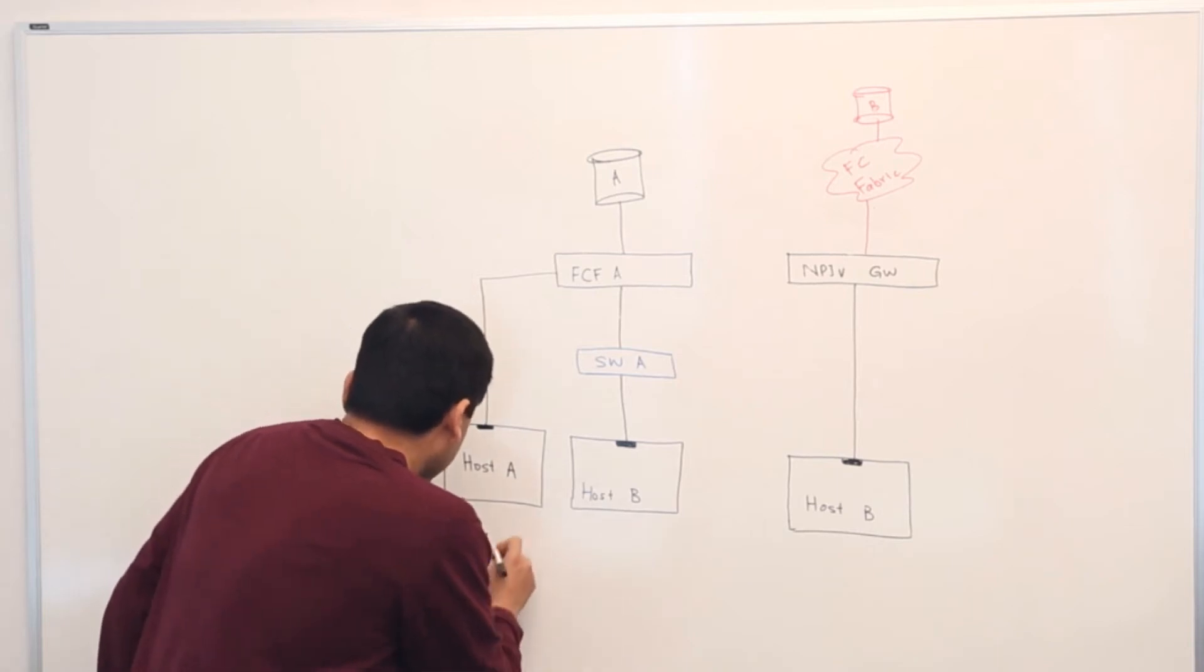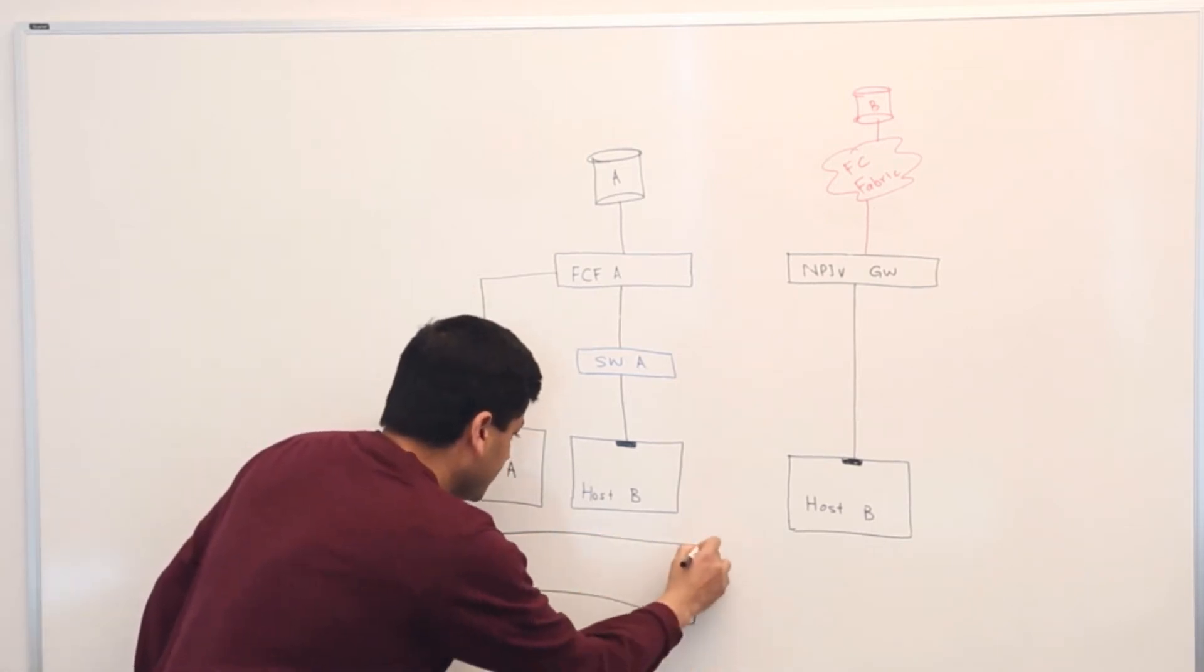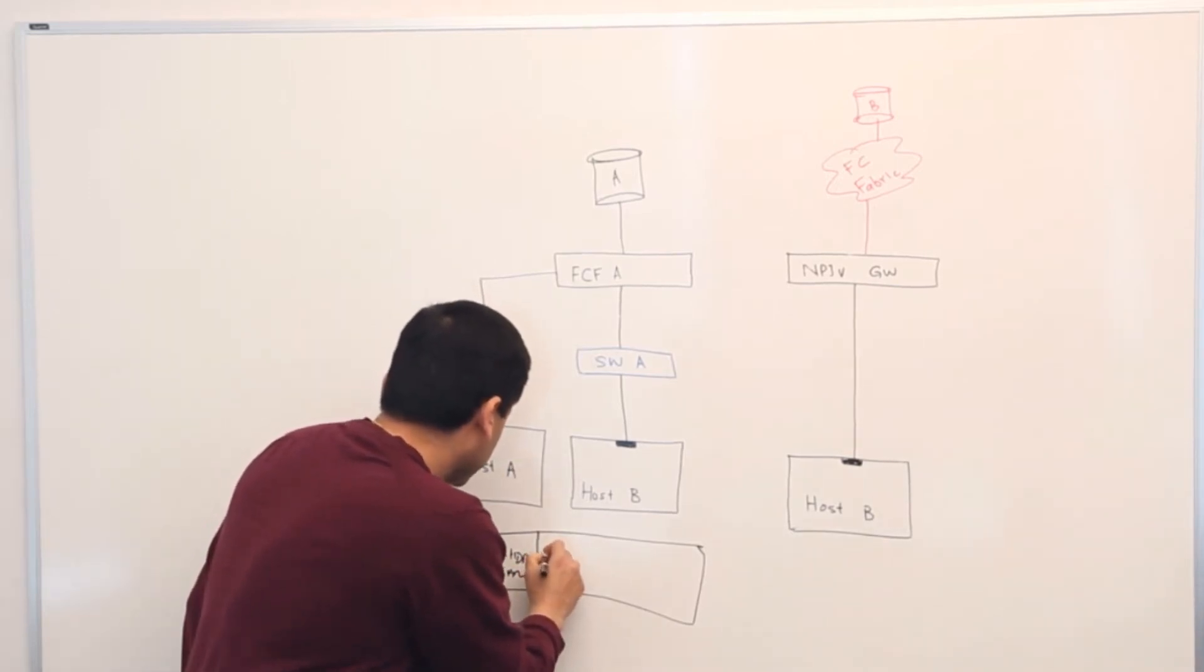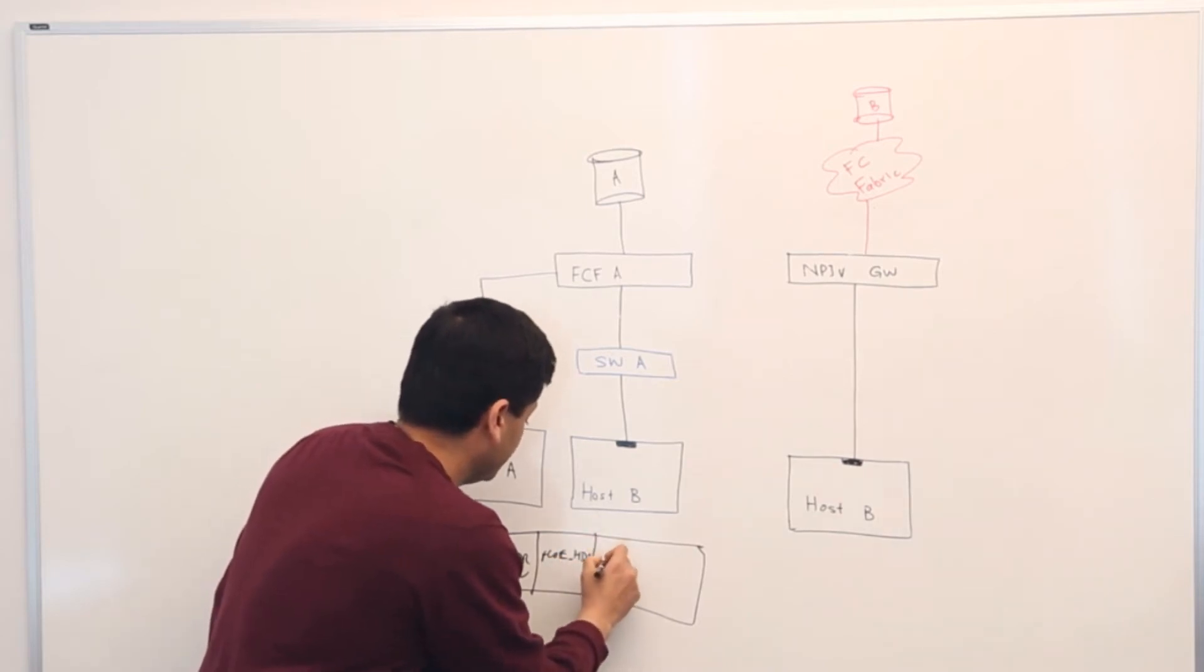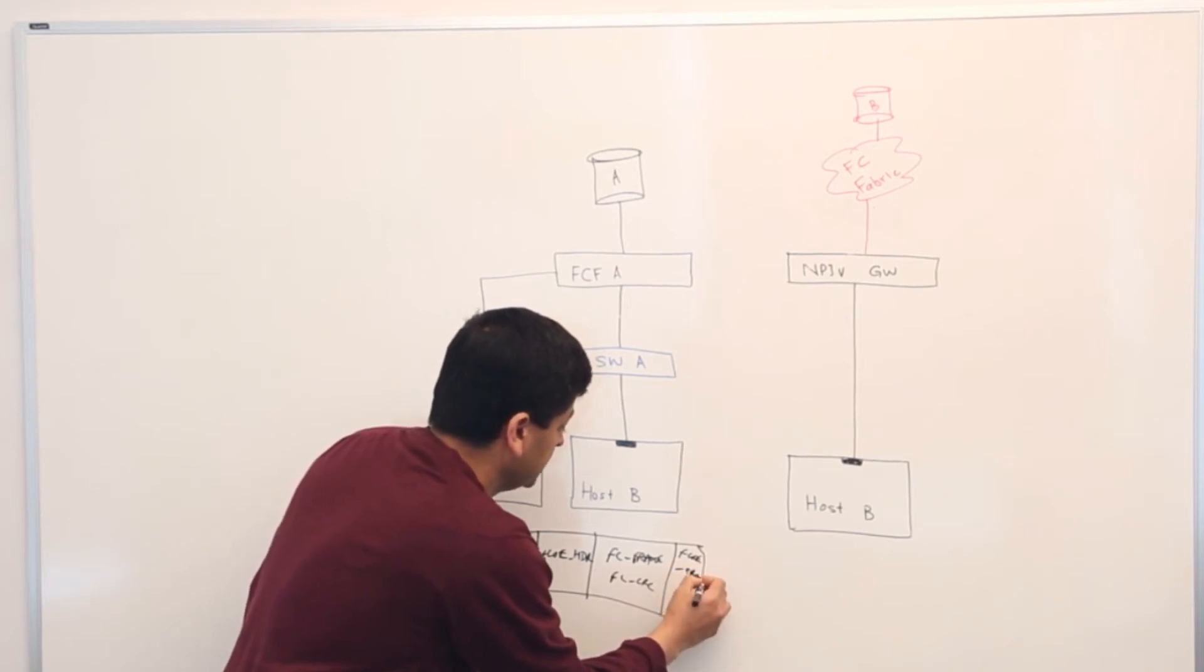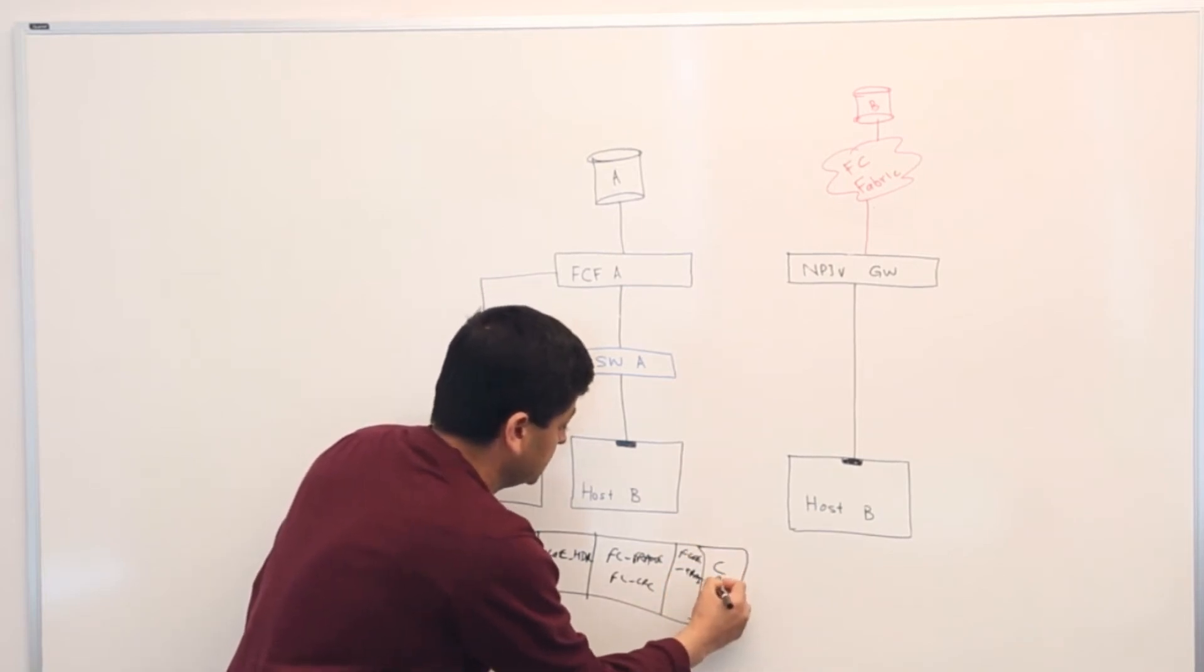So if you were to draw this picture here, we would have an Ethernet header, including VLAN. We would have an FCoE header. We would have the full FC frame, including FC CRC. And we would have what we call an FCoE trailer. And we would have the Ethernet CRC.